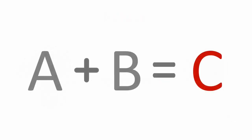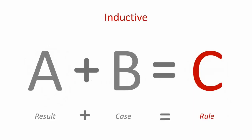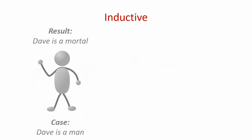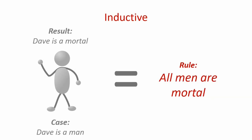Now let's focus on what A plus B equals C means in a research study that follows the inductive approach. A is your result, B your case, and C is your rule. As you can see, it is the inverse of the deductive approach. For example, Dave is a mortal. Dave is also a man. Since Dave is a man and Dave is also a mortal, therefore all men must be mortal.